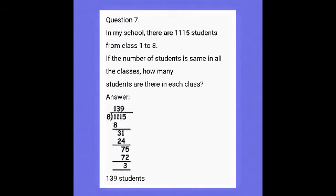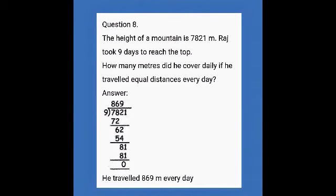Question number 8: The height of a mountain is 7821 meters. Raj took 9 days to reach the top. How many meters did he cover daily if he traveled equal distance every day? So 7821 ÷ 9. In 78, how many 9s? Eight — 8 × 9 = 72. Balance: 78 − 72 = 6. Take down 2 — now 62. How many 9s? Six — 6 × 9 = 54. So 62 − 54 = 8. Take down 1 — now 81. How many 9s? Nine — 9 × 9 = 81. Remainder 0. He traveled 869 meters every day.